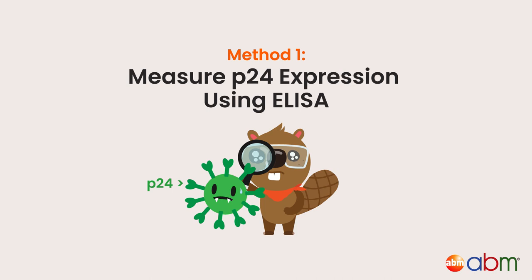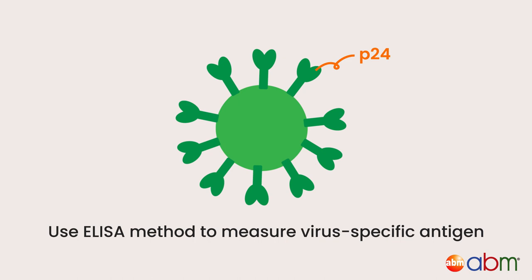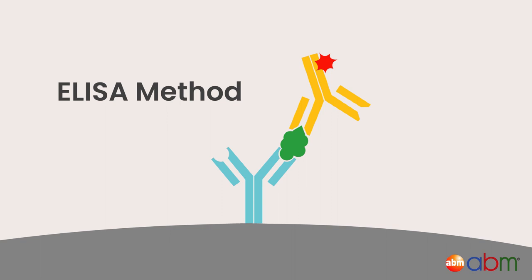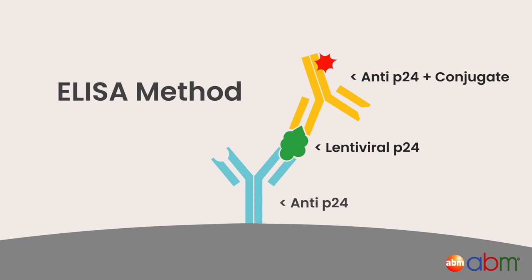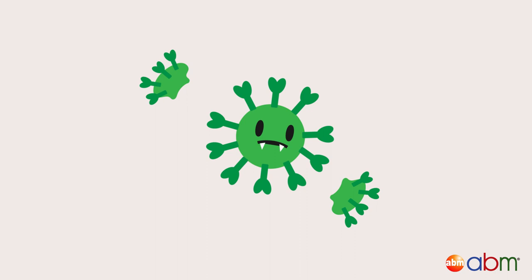Method one: measure p24 expression using ELISA. You can use the ELISA method to measure virus-specific antigen on the surface of the virus. For example, use a p24 ELISA kit to determine the amount of the lentiviral capsid protein p24 in your prep. A challenge with this method is that you will be measuring all p24, even if it is not incorporated into a lentivirus.